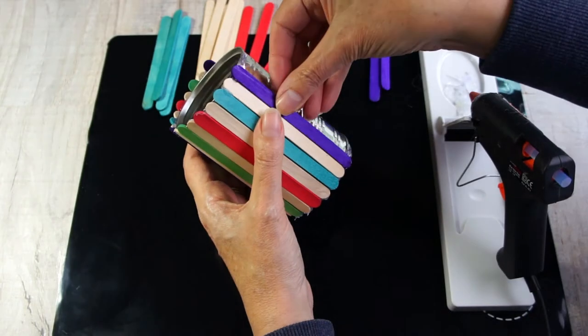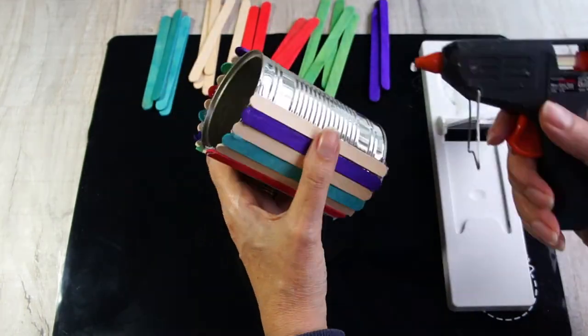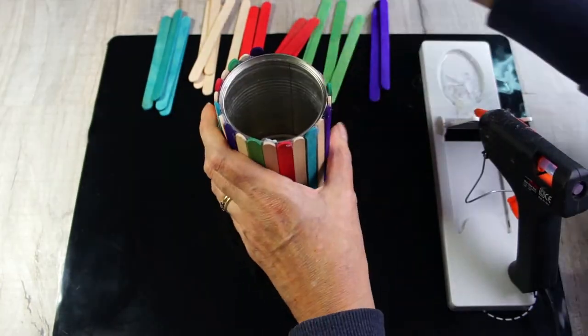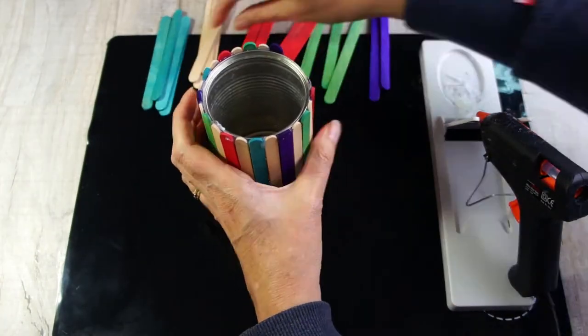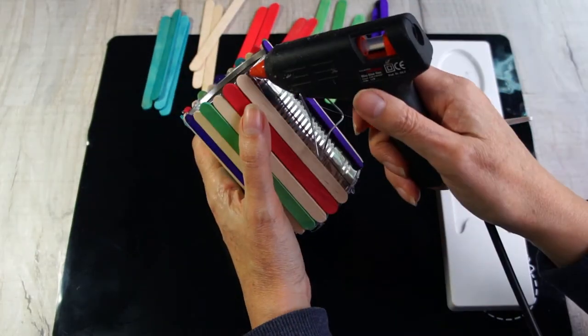Simply carry on and work your way around the rest of the tin. You'll notice I keep pulling little strings off. That's just strings of the hot melt glue and I'm just tidying a bit as I go along.